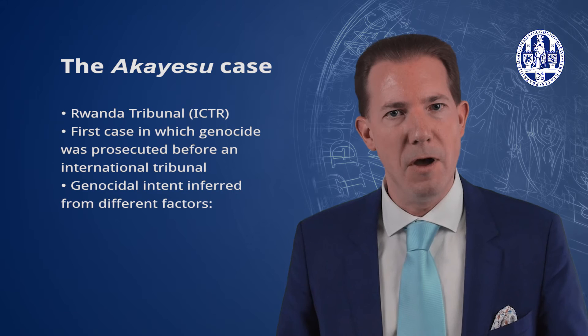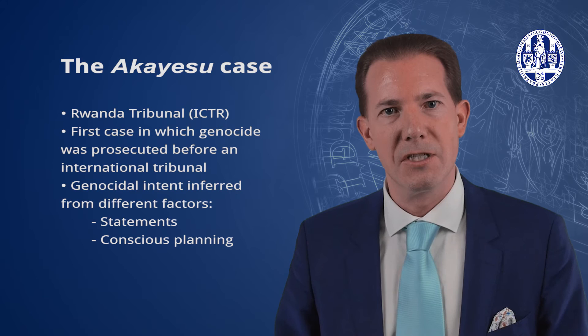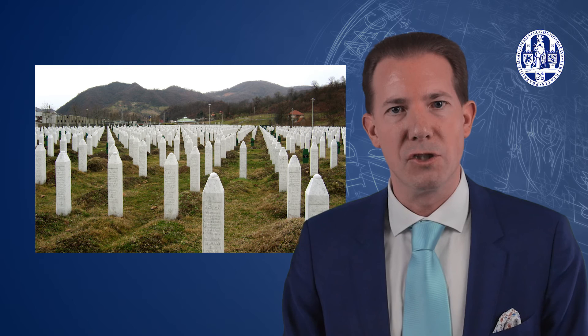The tribunal inferred genocidal intent from four different factors: first, statements indicating genocidal intent, such as the qualification of the Tutsi population as cockroaches; second, conscious planning; third, the systematic targeting of the Tutsis by the Hutu; and fourth, the scale of the atrocities. The Yugoslavia tribunal established in a number of historic judgments that the massacre of Bosnian Muslims in Srebrenica constituted genocide. There was evidence that 7,000 to 8,000 Bosnian Muslim men were killed in the enclave, and the tribunal found that this was large enough to constitute genocide.